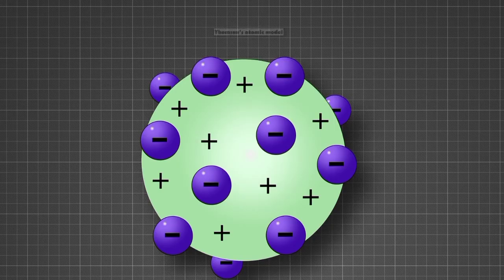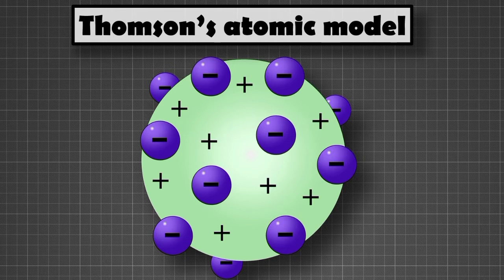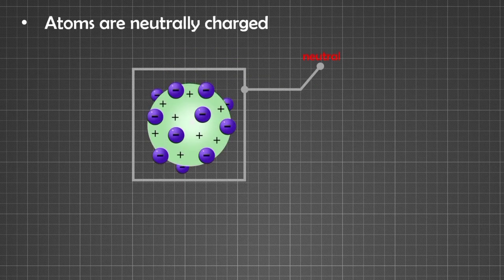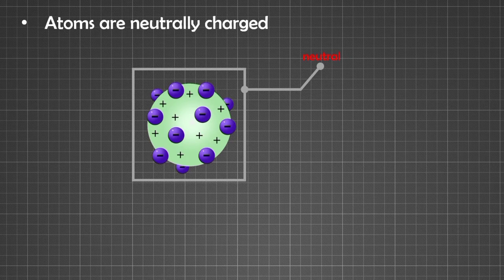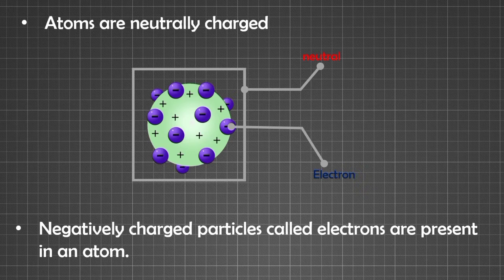So he proposed a model on the basis of known properties available at that time. The known properties are: atoms are neutrally charged, and negatively charged particles called electrons are present in an atom.